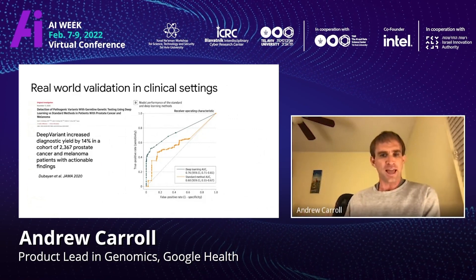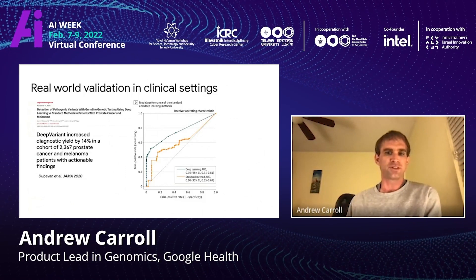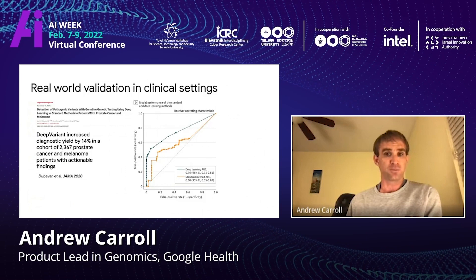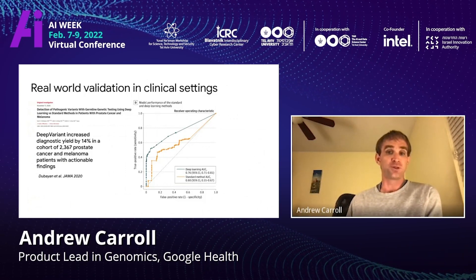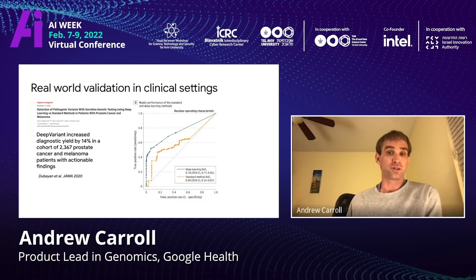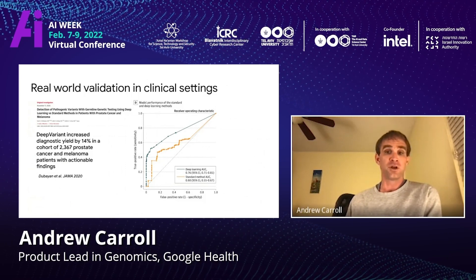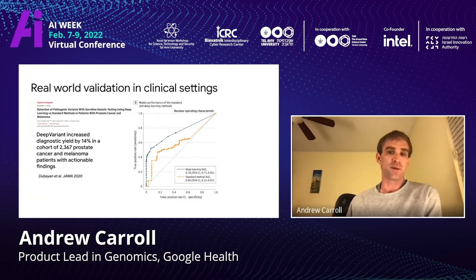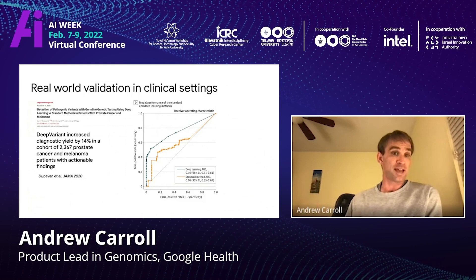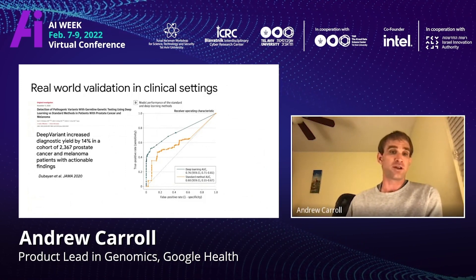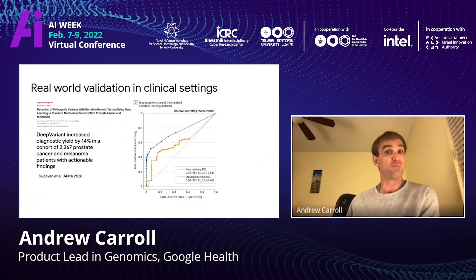The accuracy doesn't just manifest in benchmark data. We have a set of very well-characterized genomes from NIST for computational validation. Other groups externally have taken this into real-world clinical settings and seen that this accuracy really does translate to improved diagnostic yield. Here's a paper from JAMA, where in a cohort of about 2,400 people, DeepVariant compared to the state-of-the-art method increased the general diagnostic yield by 14% for two different cancer types, with often actionable findings for individuals who received positive results that were missed by the other test.